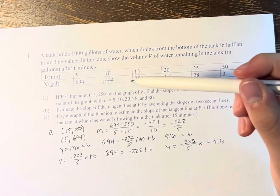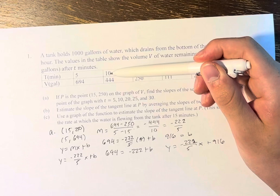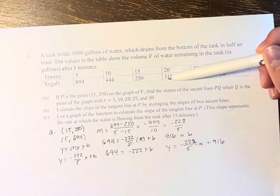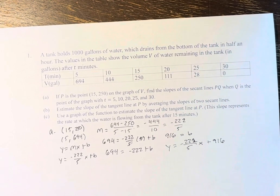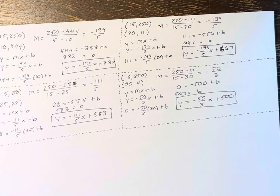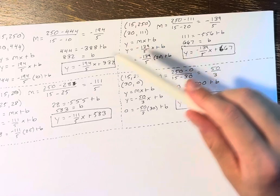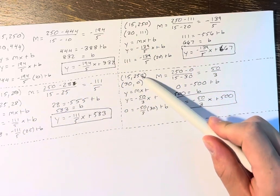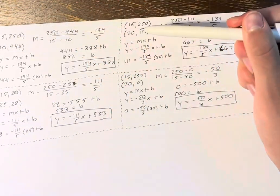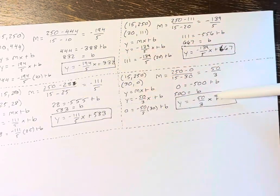And we do the same but instead of 5, 694, the point I've put in here, we do 10, 444, 20, 111, 25, 28, and 30, 0. And I have done this ahead of time because it's just the same exact process. So for the points at T equals 10, 20, 25, and 30, we have the following slopes and their equivalent lines. So if you just want to pause and take a look at this, we can move on to part B.